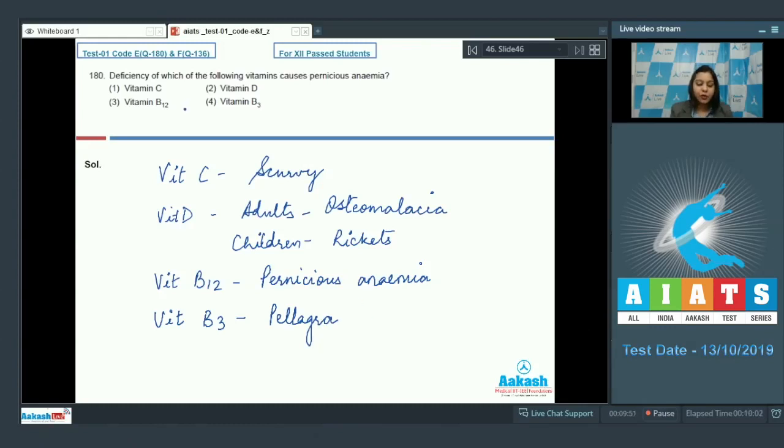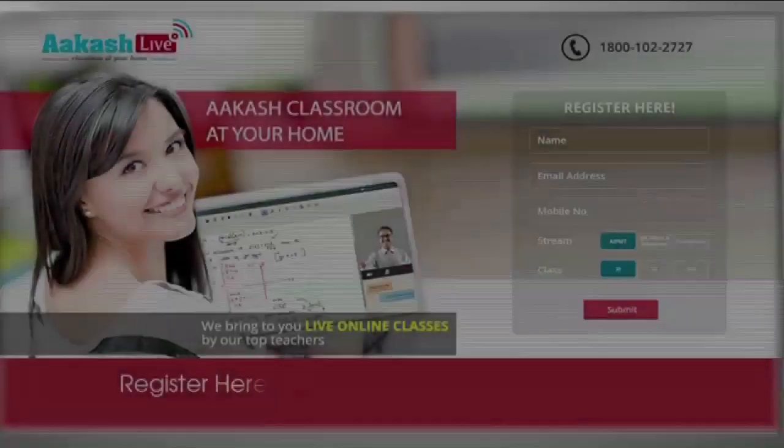Therefore, the vitamin whose deficiency is going to cause pernicious anemia is option number 3 that is vitamin B12. So answer becomes option number 3. So students, here we have completed the solutions of zoology of AIATS 1. I hope you did well in the exam. All the best for the next AIATS. Thank you.